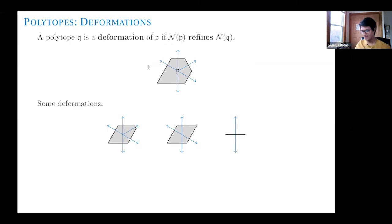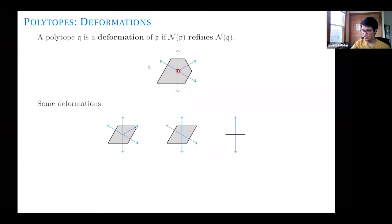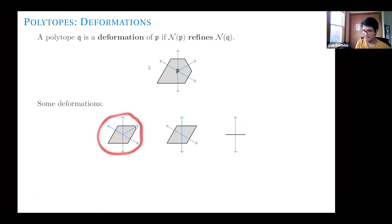Here is one of the possible equivalent definitions of a deformation: a polytope Q is a deformation of a polytope P if the normal fan of P refines the normal fan of Q. Here I have polytope P and its normal fan, consisting of five one-dimensional cones (rays) and five two-dimensional cones between them, plus the origin. For example, I took a face of P and pushed it slightly in the direction of an arrow without changing the direction of the edge — contracted it — and the resulting polytope has the same normal fan. This is considered a deformation of P.